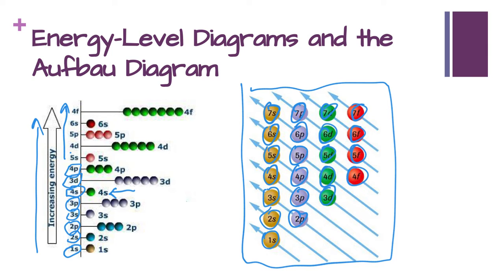The way we read this diagram is we follow it through with arrows. We read them on the diagonal and we fill the 1s first, then we're going to go back to this line and fill the 2s next, then we're going to go back to the beginning of this line and fill the 2p next, and then the 3s.